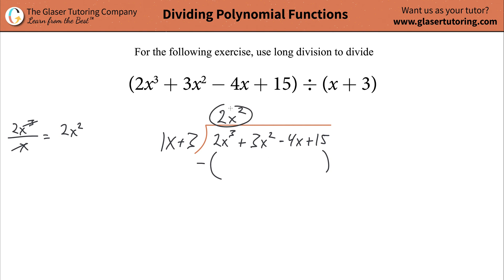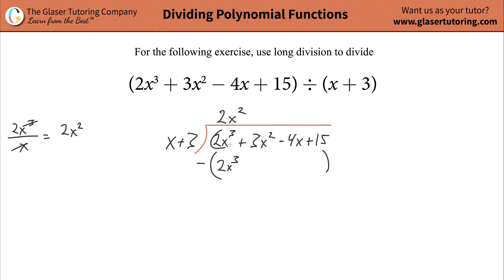Take this term — I'm going to get rid of the 1 because it's distracting — and distribute it to each term in your divisor. So 2x squared multiplied by x is going to be 2x cubed. If you did this right, they both should match. And then take 2x squared and multiply it by positive 3, so that's going to be positive 6x squared.